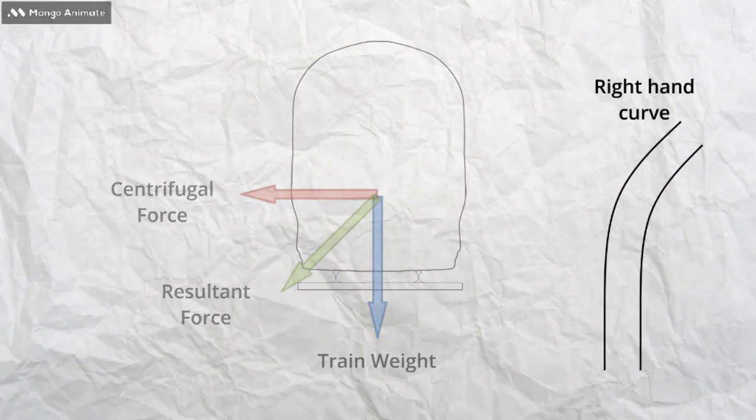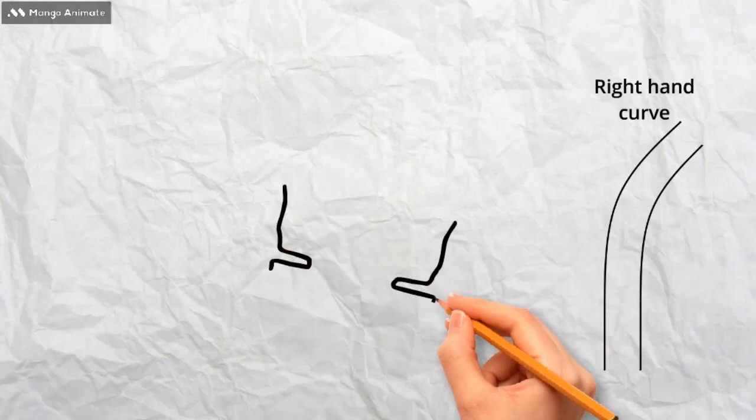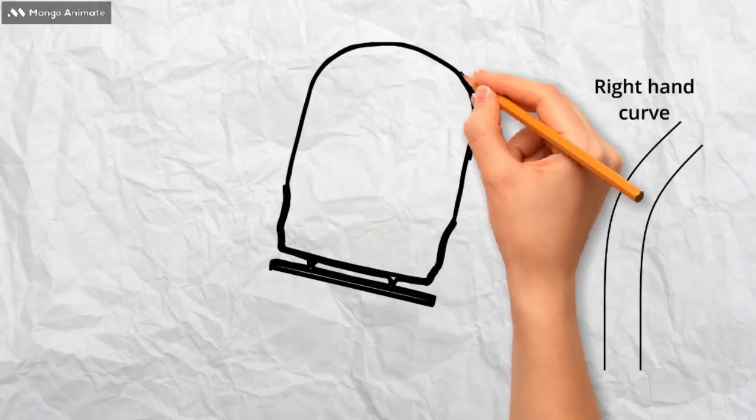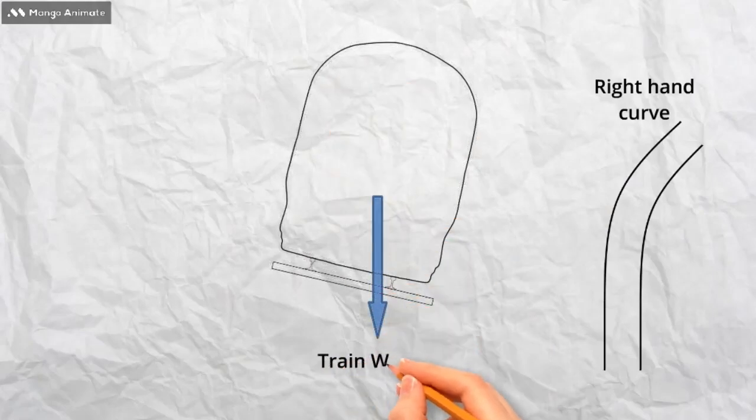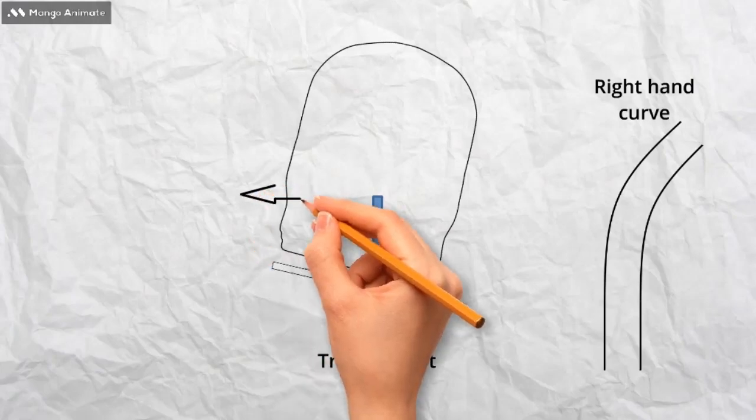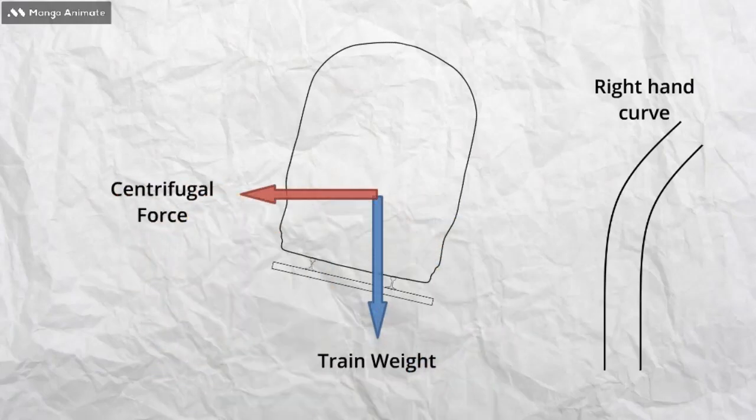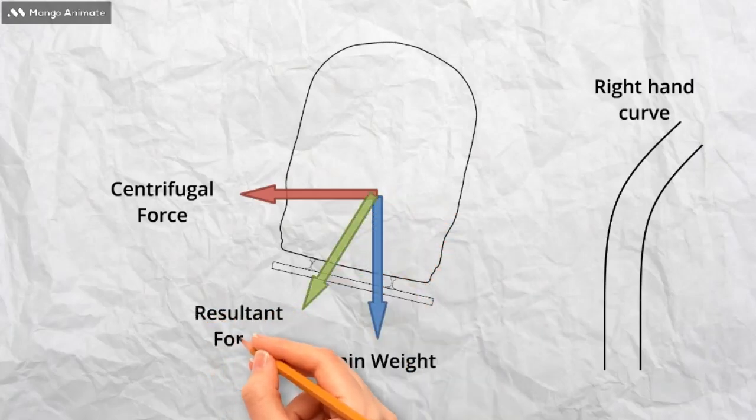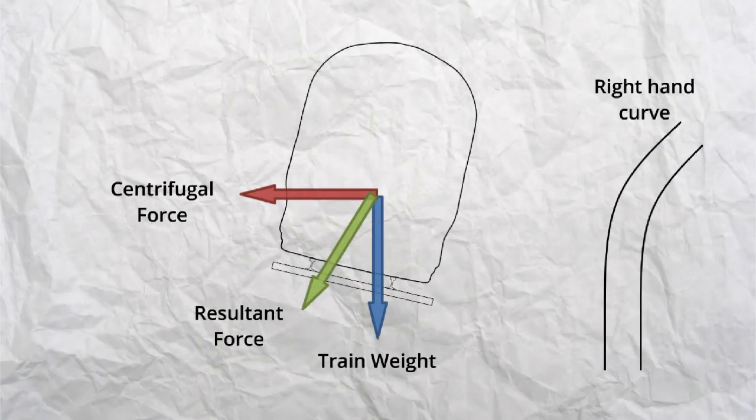By applying cant, or raising the outer rail, the direction of this resultant force is moved, in a more downward direction towards the floor of the train. The overall direction of the resultant force is dependent on the angle at which the train is tilted. This in turn is governed by the amount of cant applied to the track. This is how track engineers can control or influence the direction of the forces acting on the rails and track.